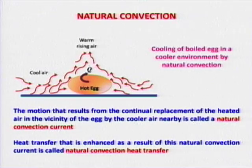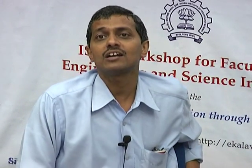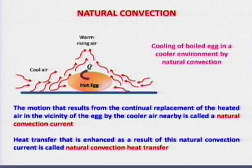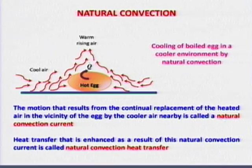For natural convection to take place, two conditions have to be satisfied. Number one, there has to be a temperature gradient because of which density differences are generated. Number two, there has to be acceleration due to gravity. Because of these two, body force is created. If G is there but there is no temperature difference, no natural convection. If there is a temperature difference but no acceleration due to gravity, like in space, then there is no natural convection. Both conditions must be present, otherwise natural convection cannot occur.